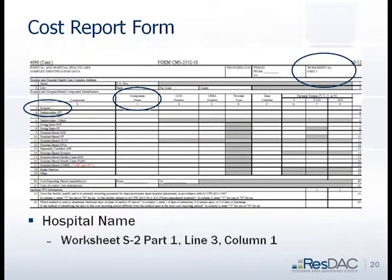Here we've got Worksheet S3 Part 1. Looking at the column — provider name, hospital name — that looks like column one. Let's look at what line that is. That's line three, not line one. These are the pieces of information you need to identify any variable: the worksheet code, the column, and the line. Just to note, it should be line three, not line one as listed in your workbook.